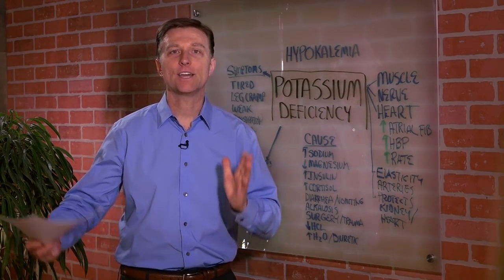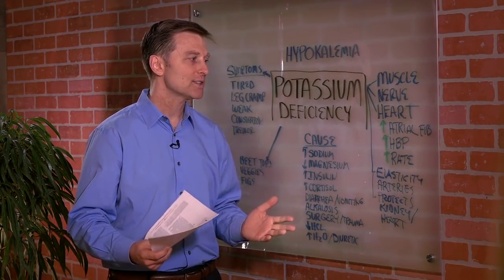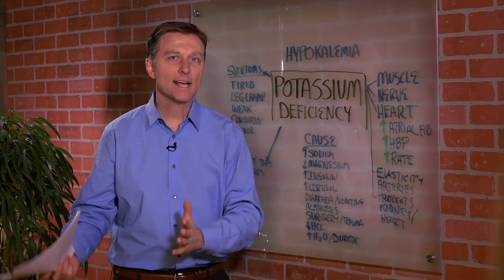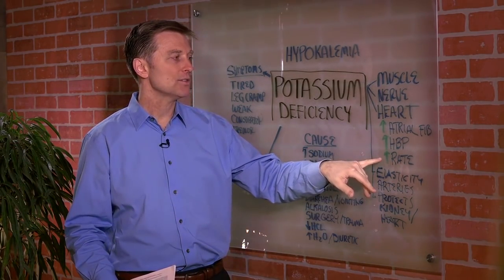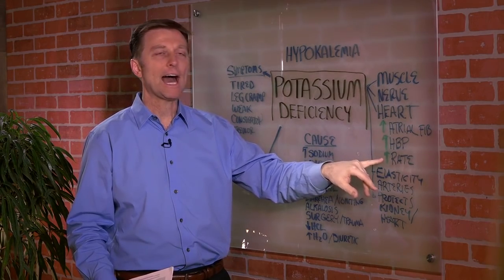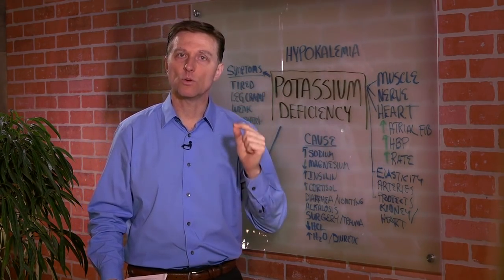And what do they give you? A diuretic. What does diuretics do? Most of them deplete potassium. So it's like a never-ending cycle. And also, if you're low on potassium, you will have a higher pulse rate. Potassium lowers your pulse rate.